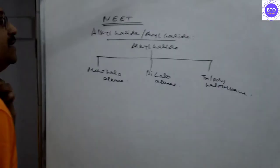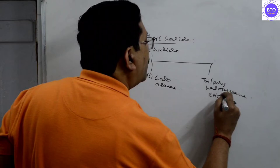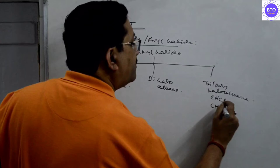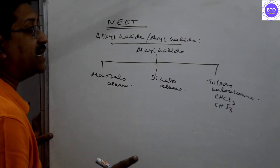Now in your syllabus, only the tri-halo alkanes—that is chloroform, CHCl3, which has three halogens, as well as iodoform, CHI3. CHCl3 is chloroform and CHI3 is iodoform.